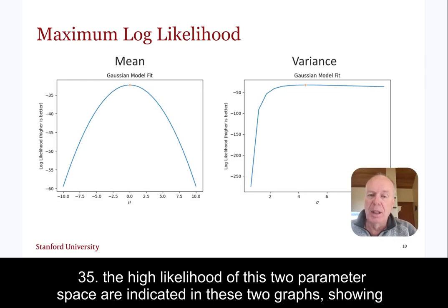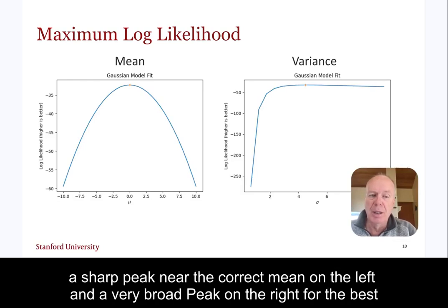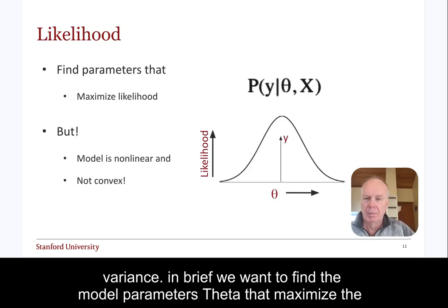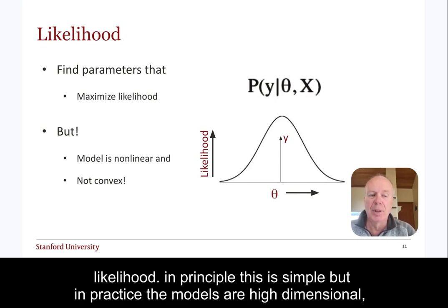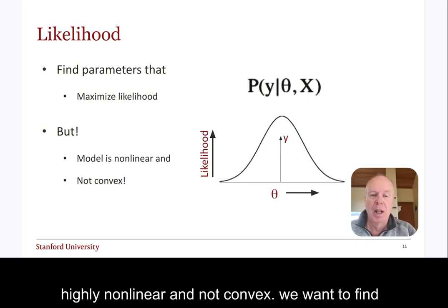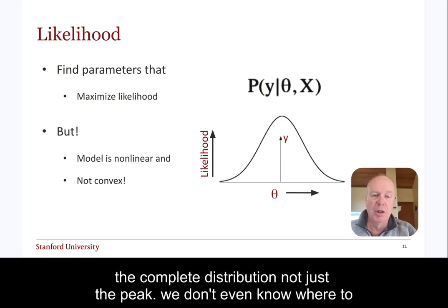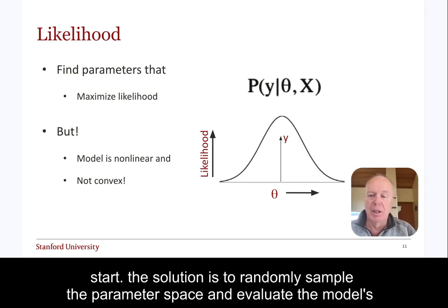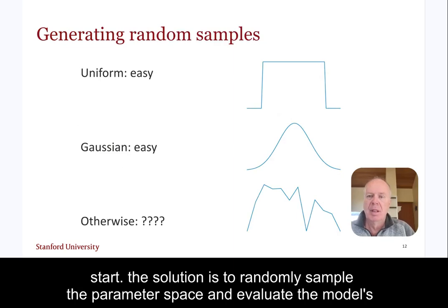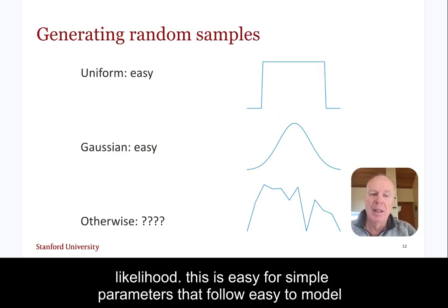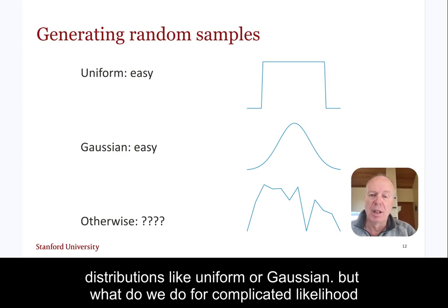The likelihood of this two-parameter space is indicated in these two graphs, showing a sharp peak near the correct mean on the left, and a very broad peak on the right for the best variance. In brief, we want to find the model parameters theta that maximize the likelihood. In principle this is simple, but in practice the models are high-dimensional, highly nonlinear, and sometimes intractable. We want to find the complete distribution, not just the peak. The solution is to randomly sample the parameter space and evaluate the model's likelihood. This is easy for simple parameters that follow easy-to-model distributions, like uniform or Gaussian.